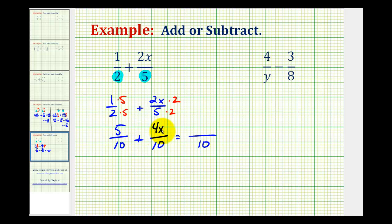Well, these aren't like terms so we can't add them. So we have to leave it as a sum. So we'll have 5 plus 4x all over 10.